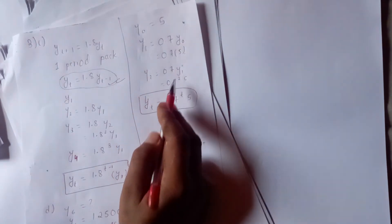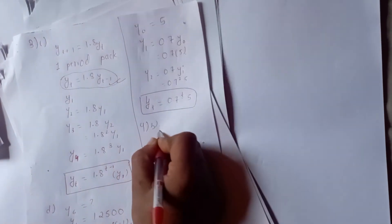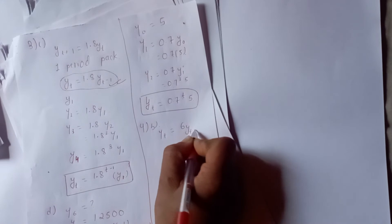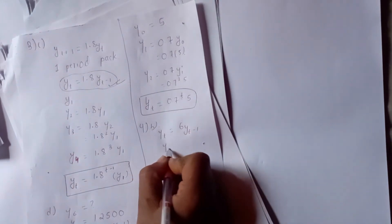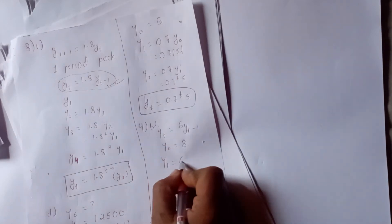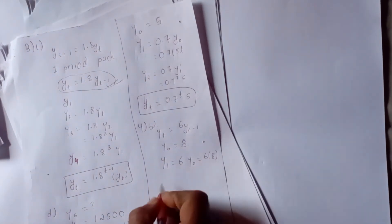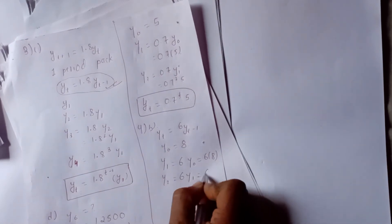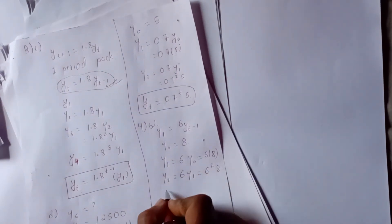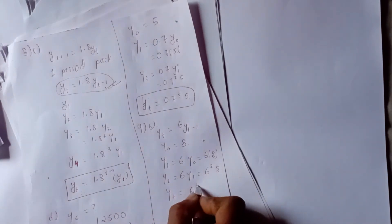To generalize the solution: the power of 1 gives y to the power of 1, the power of 2 gives y to the power of 2. This is the generalized solution. y2 equals the power of 6 times 8, and then b equals 6 times 8 by 1, so the power of 6 leads to power of 7.